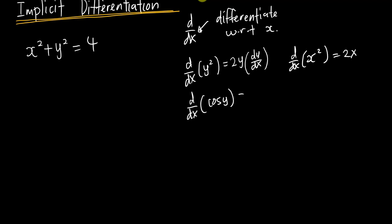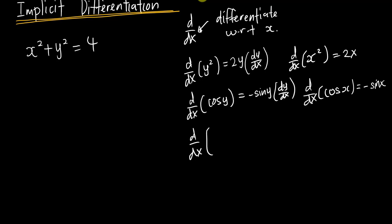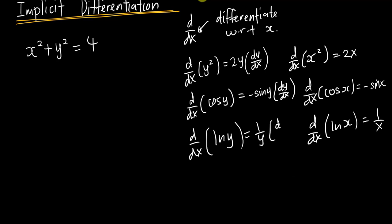For example, if I differentiate cos y, it is very similar to differentiating cos x, which gives negative sin x. So here you get negative sin y and then you add dy/dx. Same idea: if you differentiate ln y, just like differentiating ln x gives 1/x, this gives 1/y and then add dy/dx. That is how we do implicit differentiation.